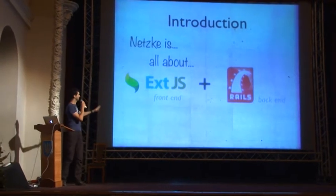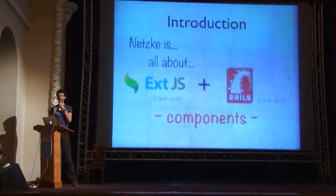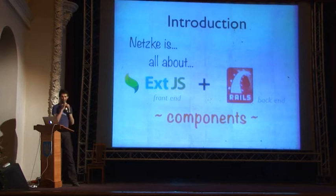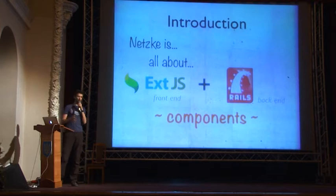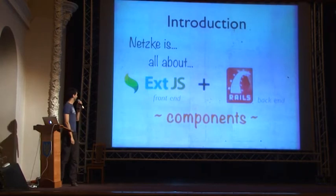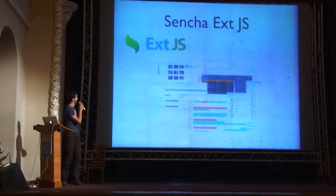Ext.js is used on the front end and Rails on the back end. It's all about ext.js and Rails components. Nick Sutter yesterday did a good job explaining what the benefits of a component are, so I'm not going into the details about this. I'll show you rather how you can use it practically and how you can build an application with this. So let's first quickly remind you what ext.js is.